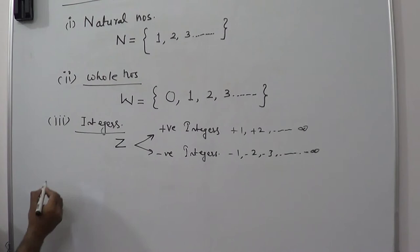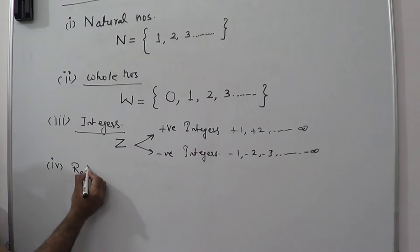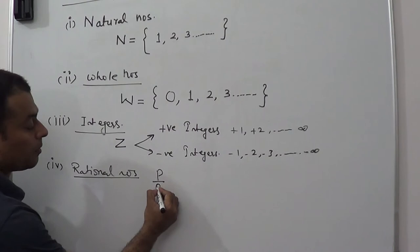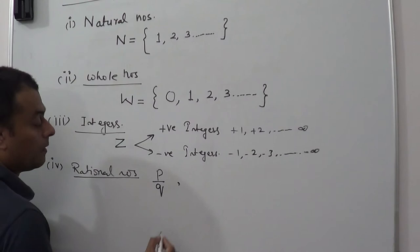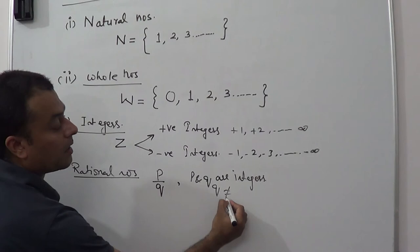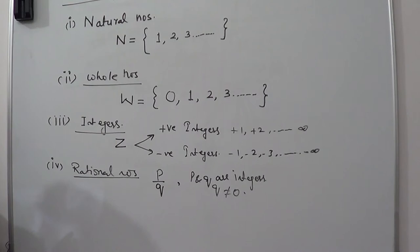Now, another category of numbers will be rational numbers, normally represented by the ratio P upon Q, where P and Q are integers and Q is not equal to 0.